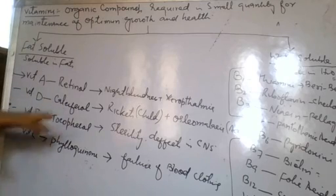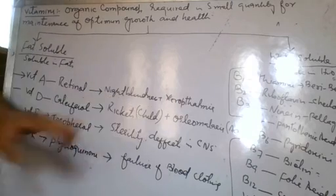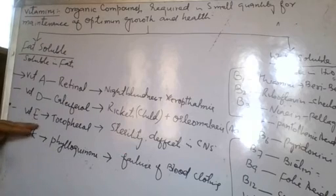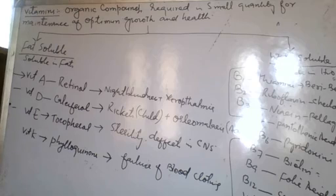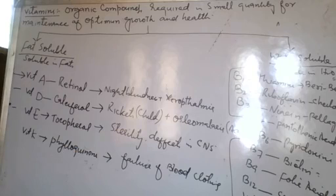Vitamin D deficiency affects mostly the bones, causing rickets in children and osteomalacia in adults. Vitamin E or tocopherol deficiency causes sterility in males, meaning males lose their fertility, and there are defects in the central nervous system.